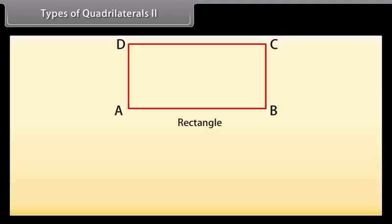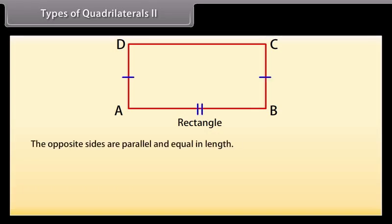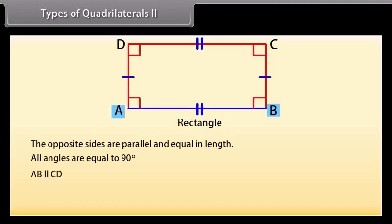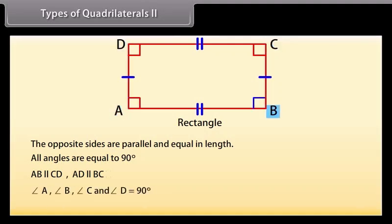Now, come to rectangle. In a rectangle, the opposite sides are parallel and equal in length, and all angles are equal to 90 degrees. Here, AB is parallel to CD and AD is parallel to BC, and angles A, B, C, and D are all 90 degrees. So ABCD is a rectangle.